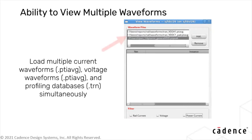The enhanced View Waveform form allows you to load and view multiple current waveforms, voltage waveforms, and profiling databases simultaneously. You can then filter and selectively load the instance waveforms based on the waveform types, such as rail current, voltage, and power current.